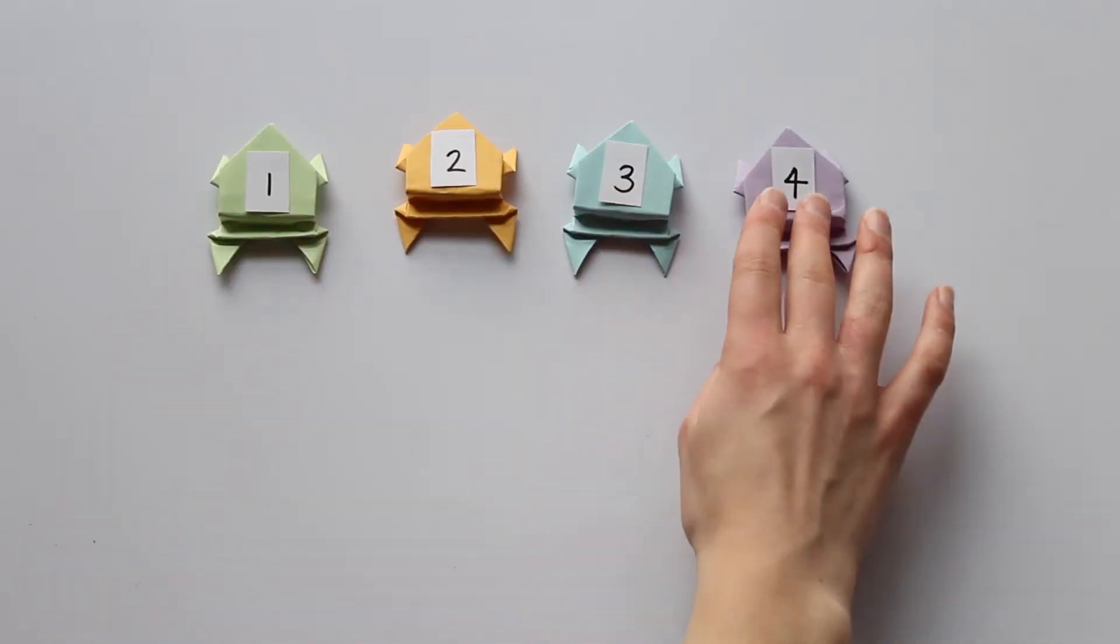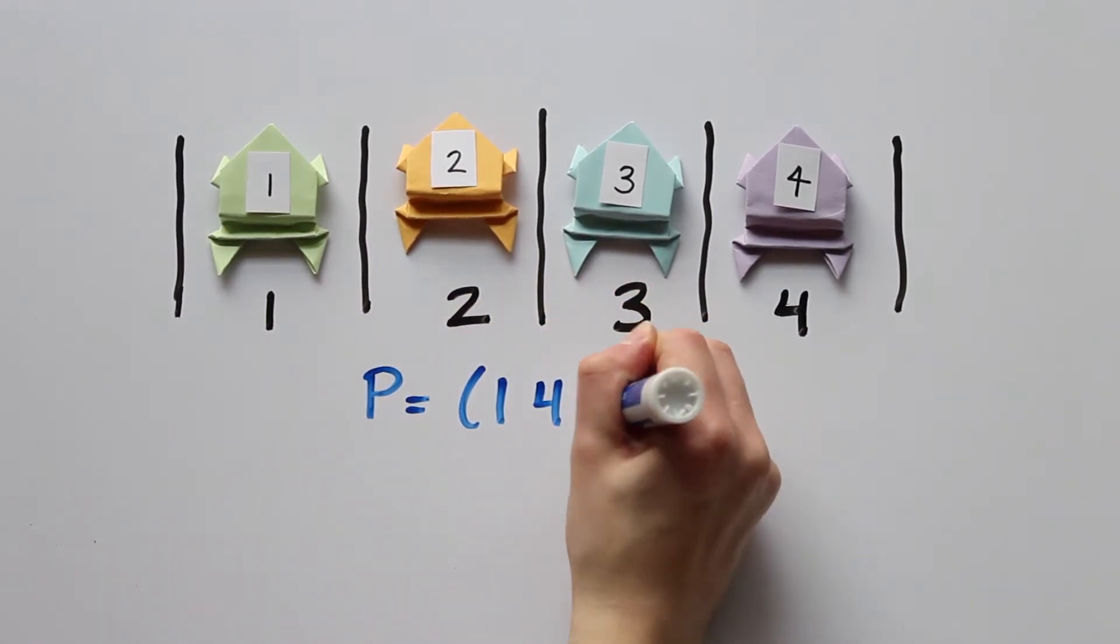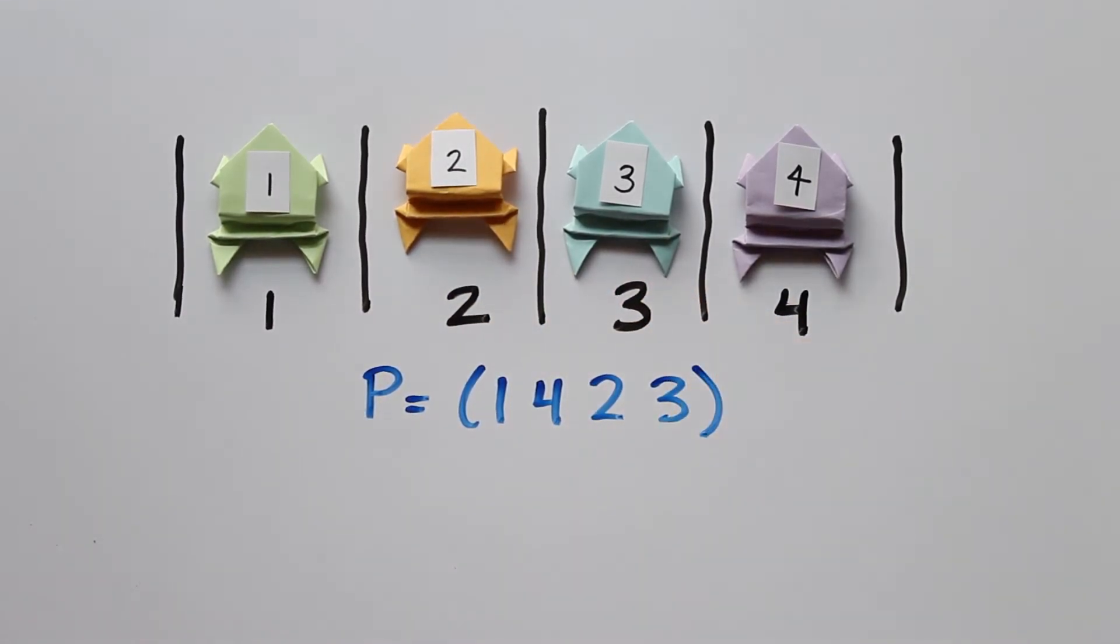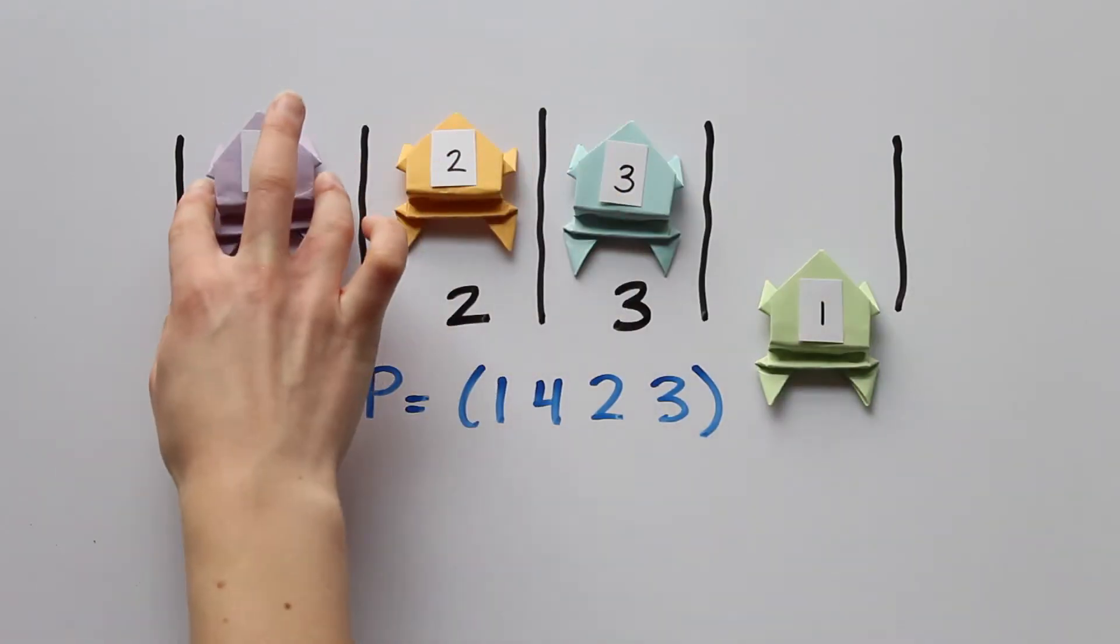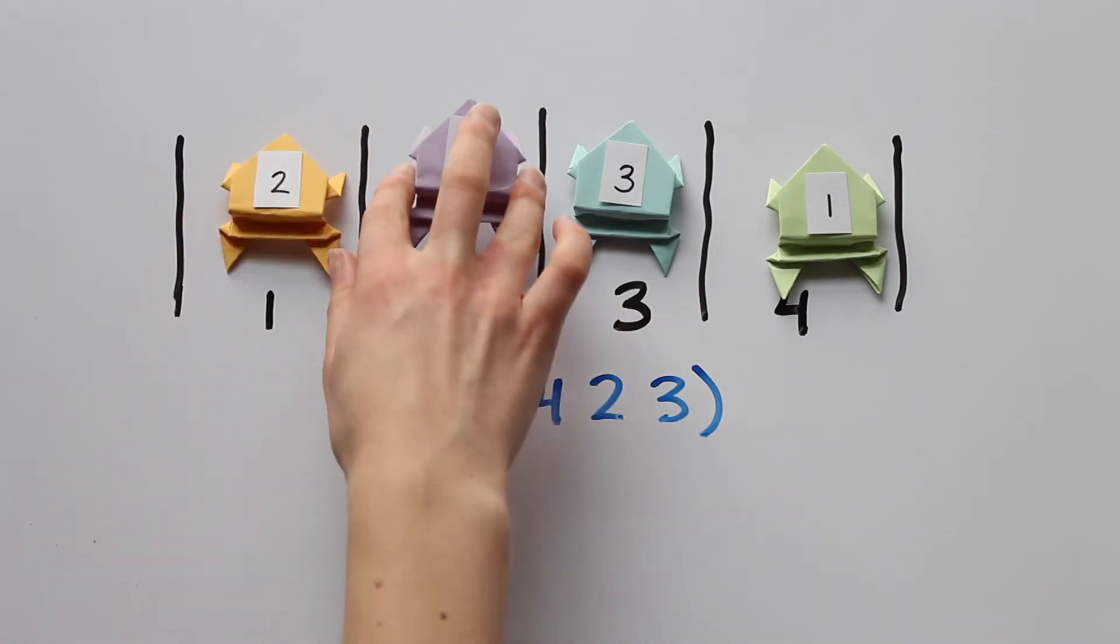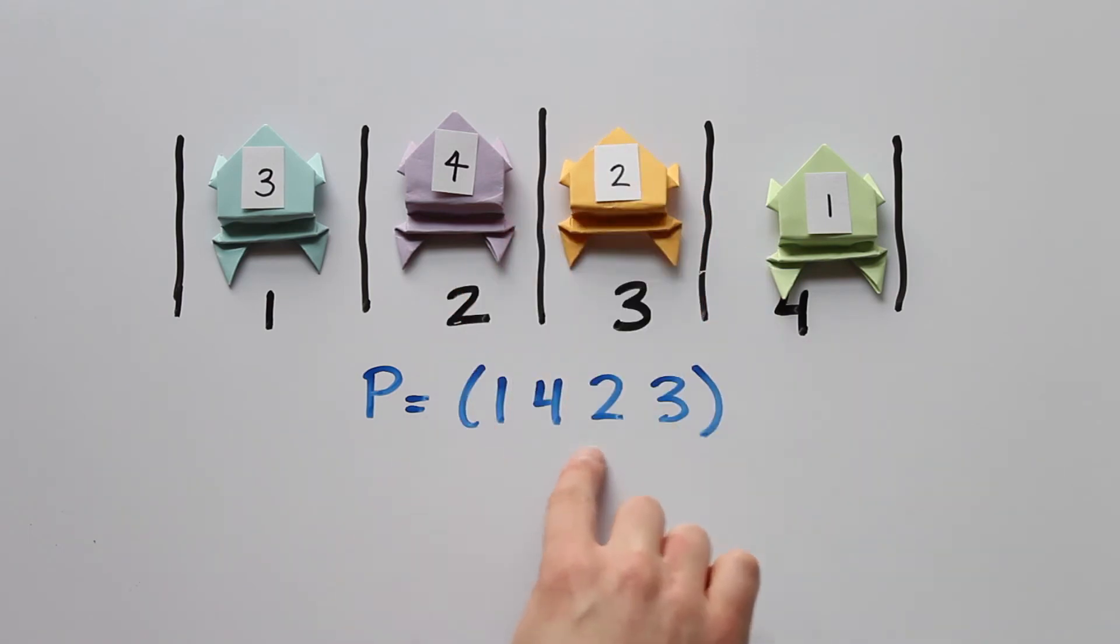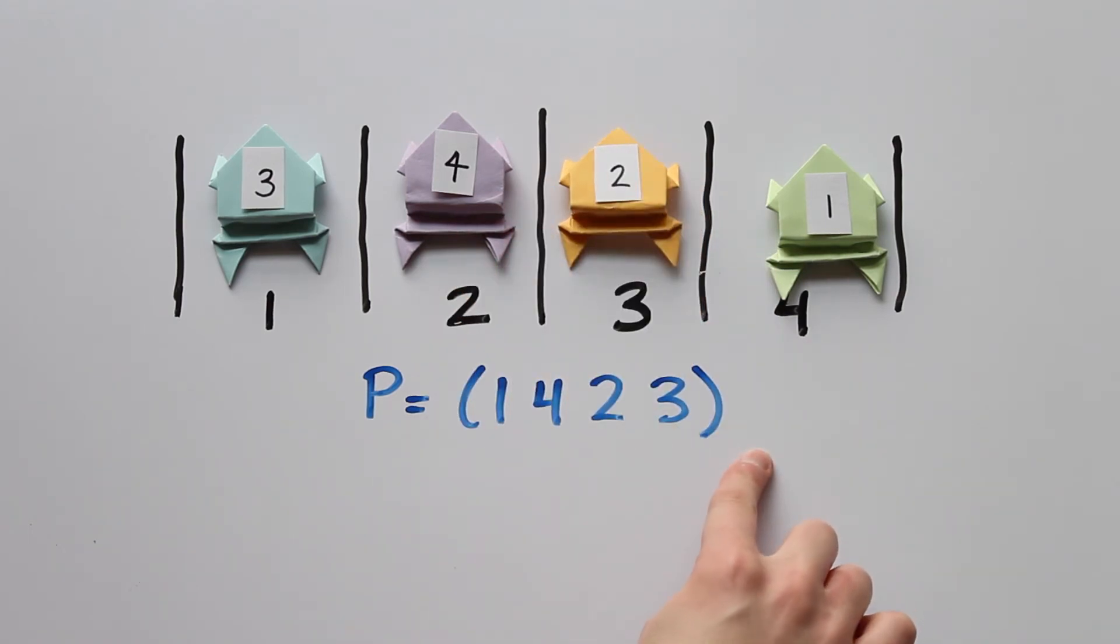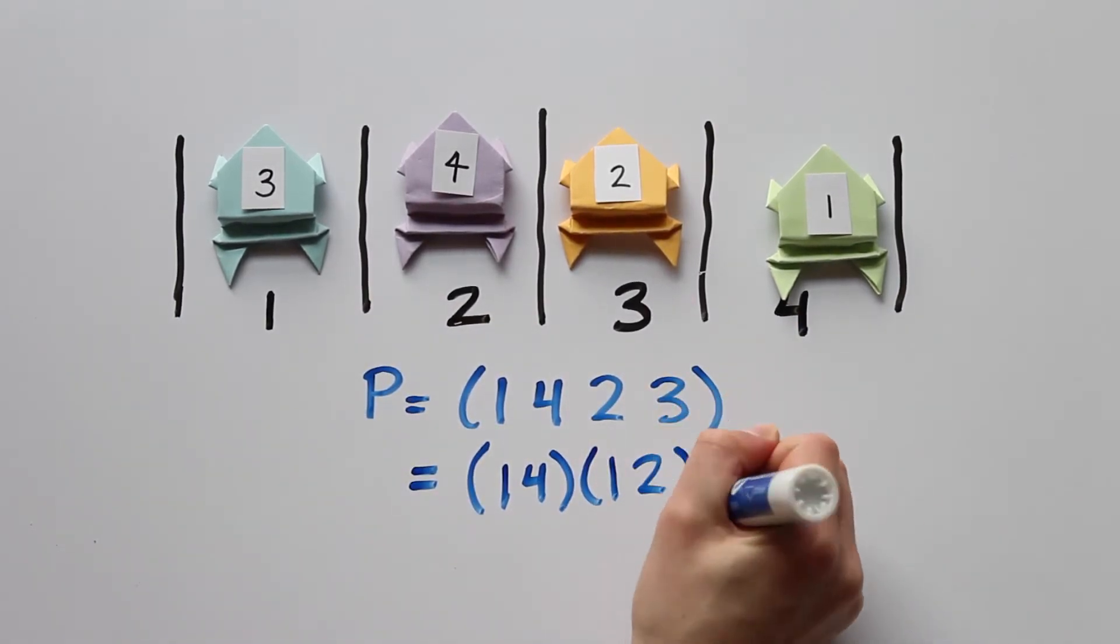Remember earlier how we were able to reach a given permutation by switching 2 frogs at a time? Let's see how that plays out with cycle notation. Okay, if I take the permutation 1, 4, 2, 3, then we want 1 to go to 4, 4 to go to 2, 2 to go to 3, and 3 to go to 1. So we can write this permutation as 1, 4, 1, 2, 1, 3.